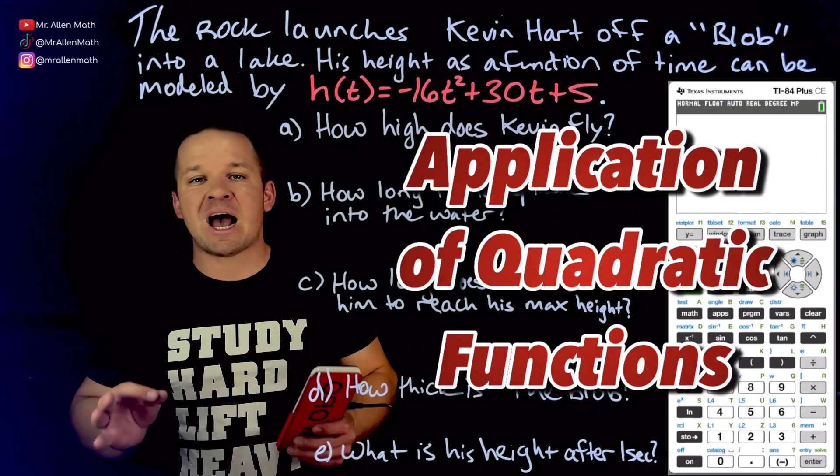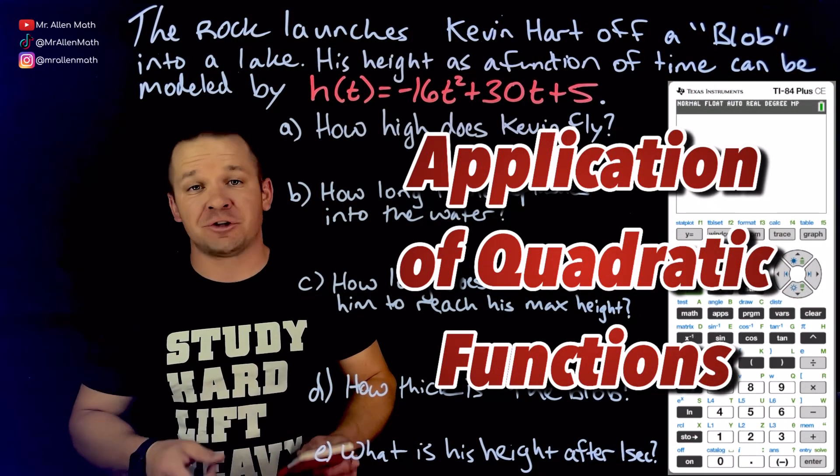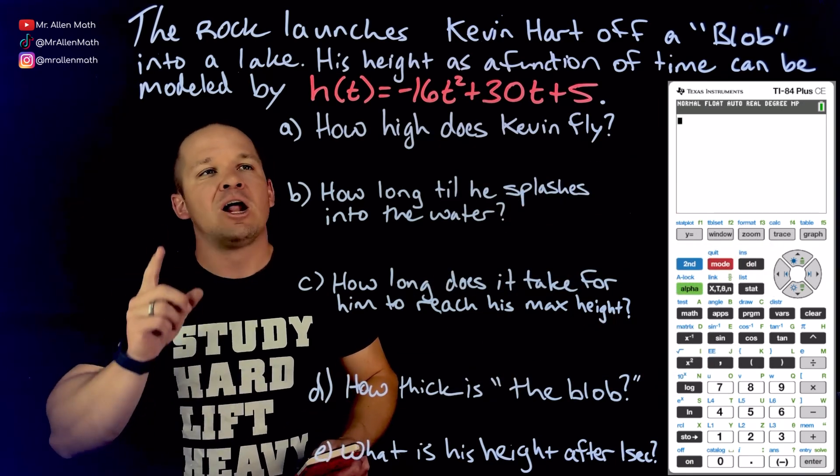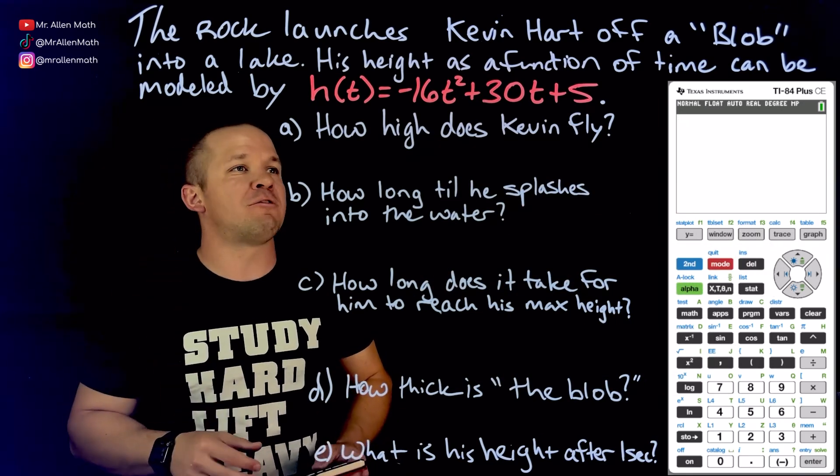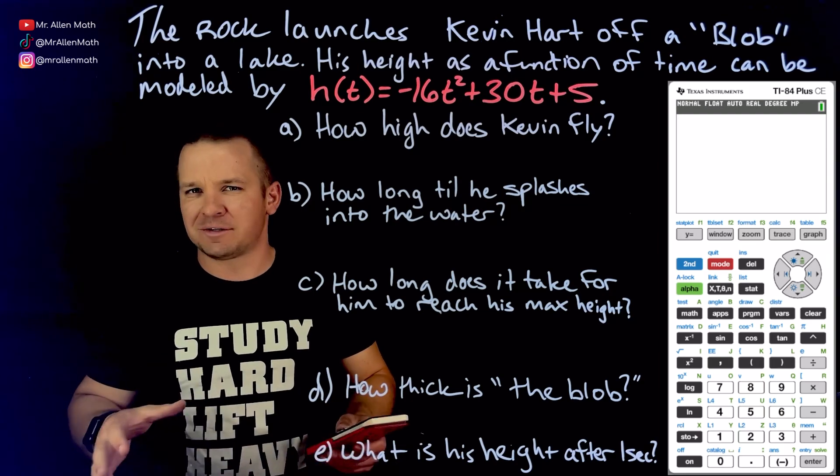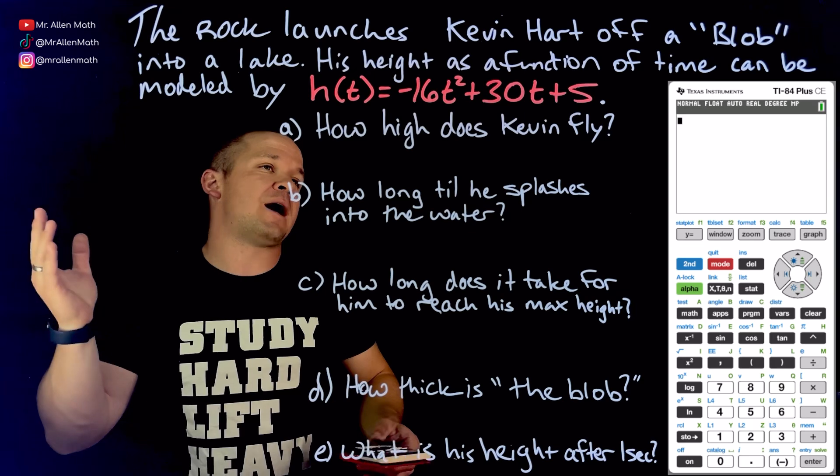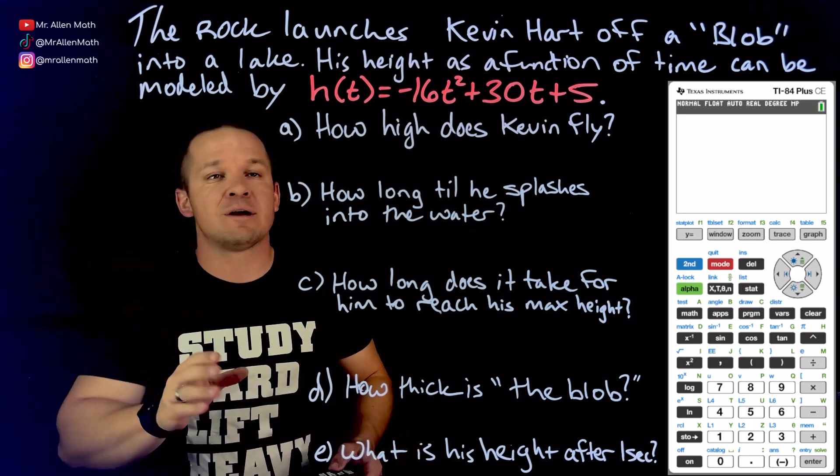What's going on you guys? Mr. Allen here with some application of quadratic functions. You're going to watch the calculator for this one. We've got Dwayne The Rock Johnson launches Kevin Hart off of a blob into a lake. You ever see those things where they, you got a couple people that jump off a big thing, person shoots in the lake and back, it's awesome.